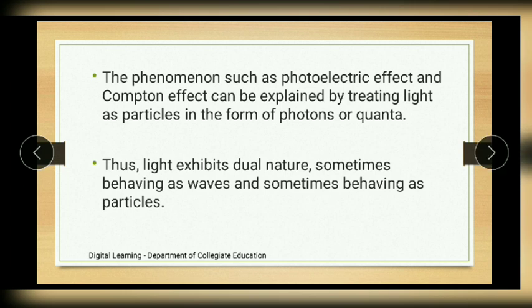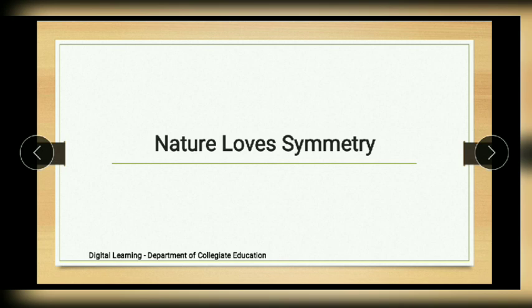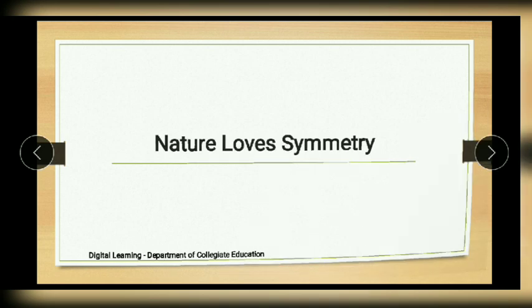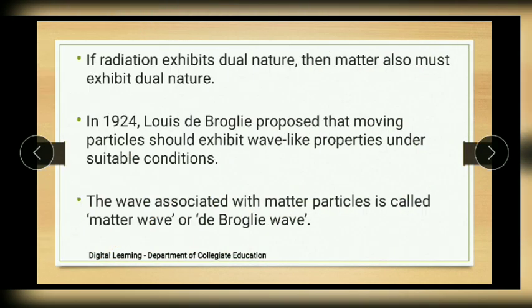In the universe, energy is manifested in the form of matter and radiation. There is a statement: nature loves symmetry, which means that if radiation exhibits dual nature then matter also must exhibit dual nature. This idea was perceived by Louis de Broglie, and he suggested that moving particles should exhibit wave-like properties under suitable conditions.